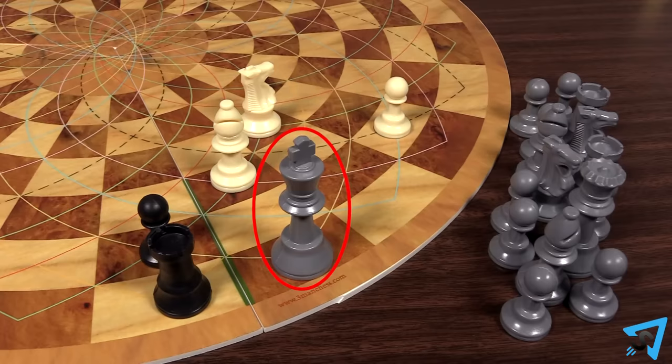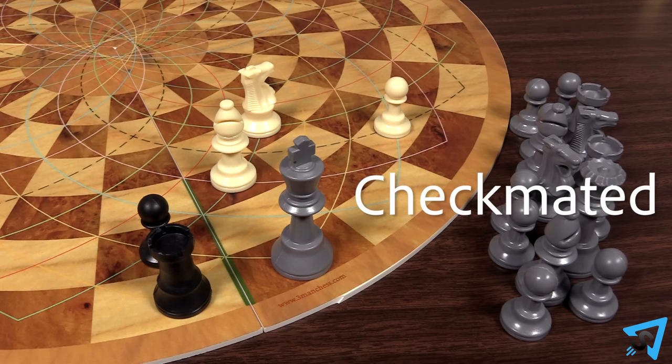If a player cannot make a legal move, called a stalemate, and three players are still in, then that player is considered checkmated and eliminated from the game. If there are only two players during a stalemate, then the game is a draw.